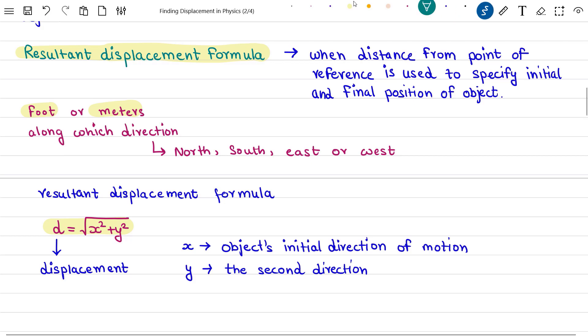If your object can only move in one direction, then y = 0. This formula also gives an equation that shows how to find displacement without using time in physics.